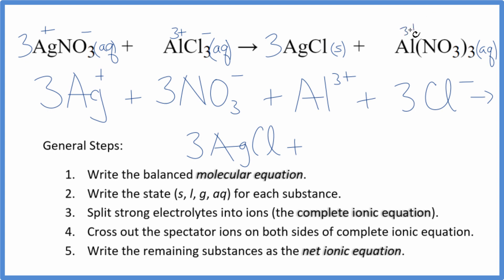Plus, we said aluminum 3+ and the nitrate ion 1-. Al 3+, just like in the reactants, and three of the nitrate ions. And those are the products. So right now, we have our complete ionic equation.